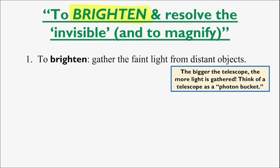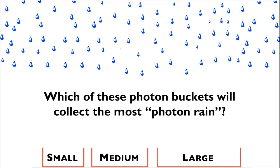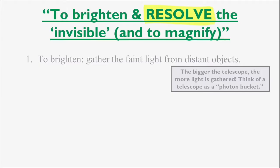Say, for example, you had three differently sized pails to collect rain — which one would collect the most? The same concept applies to photon rain. Which of these photon buckets would collect the most photon rain? Clearly, the one with the larger opening has more volume to allow it to collect more of the photons as they rain down onto it.